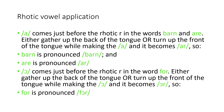In the word 'for', the 'or' sound comes just before the terminal R. So you gather up the back of the tongue, or you turn up the front of the tongue, and say 'or'. And our plain 'or' becomes the rhotic 'or'. So 'for' is pronounced 'for'.